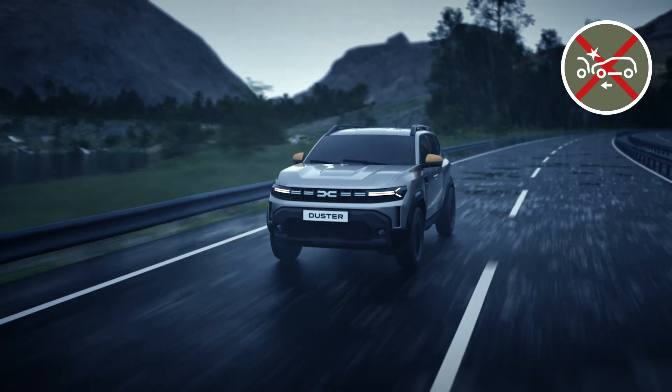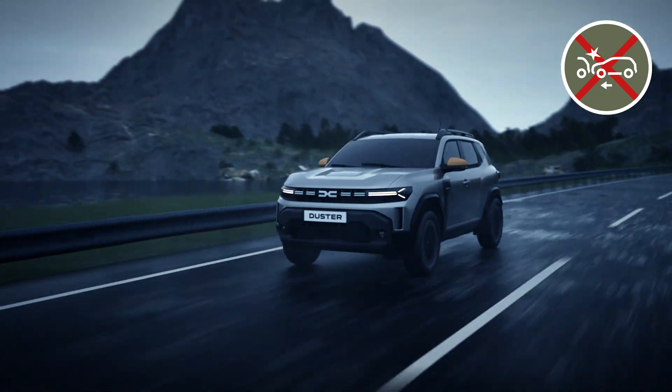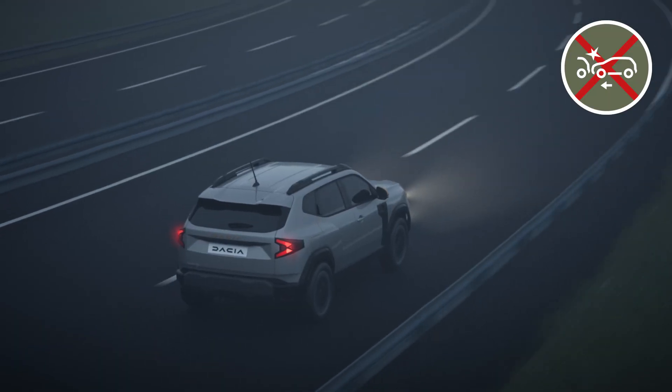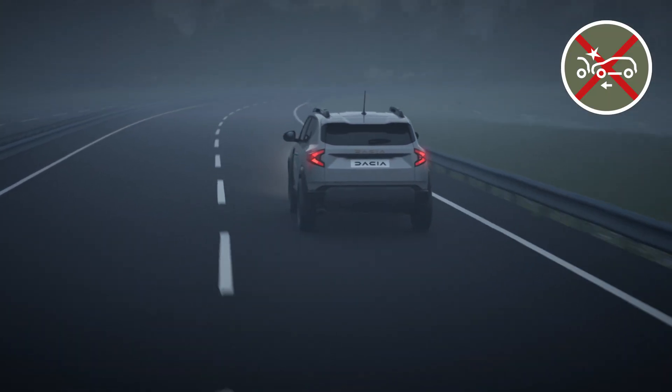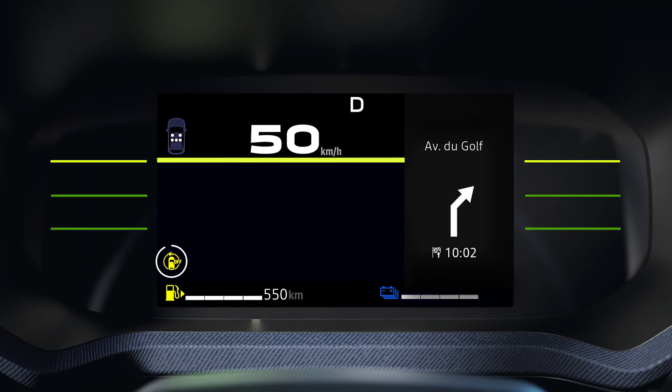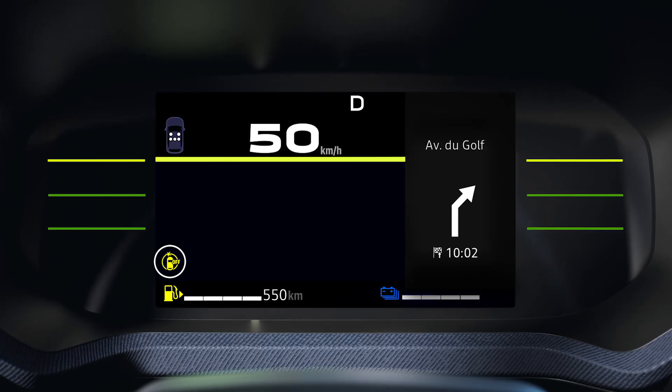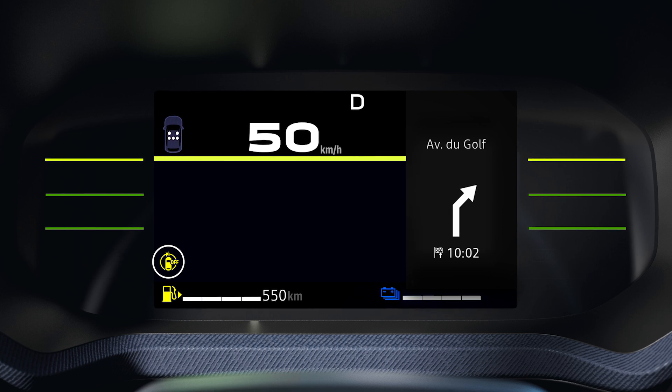In certain conditions, for example heavy rain or poor visibility, the system may be temporarily impaired. If that happens, this indicator light appears on the instrument panel.